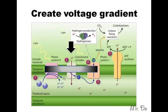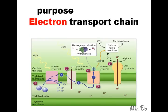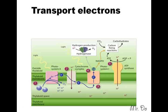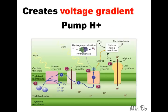The voltage gradient is negative. Hydrogen is positive. So it drags the hydrogen back inside into the thylakoid. The question is, how do you create a voltage gradient? You create a voltage gradient by transport of electrons. And that's why it's called the electron transport chain — because it transports electrons, which create a voltage gradient.